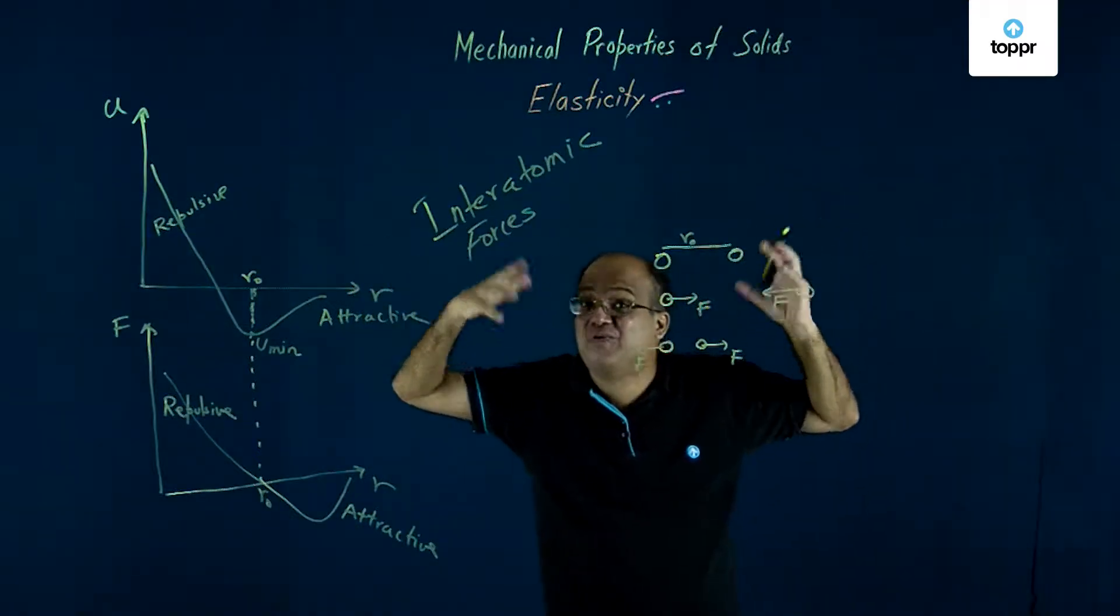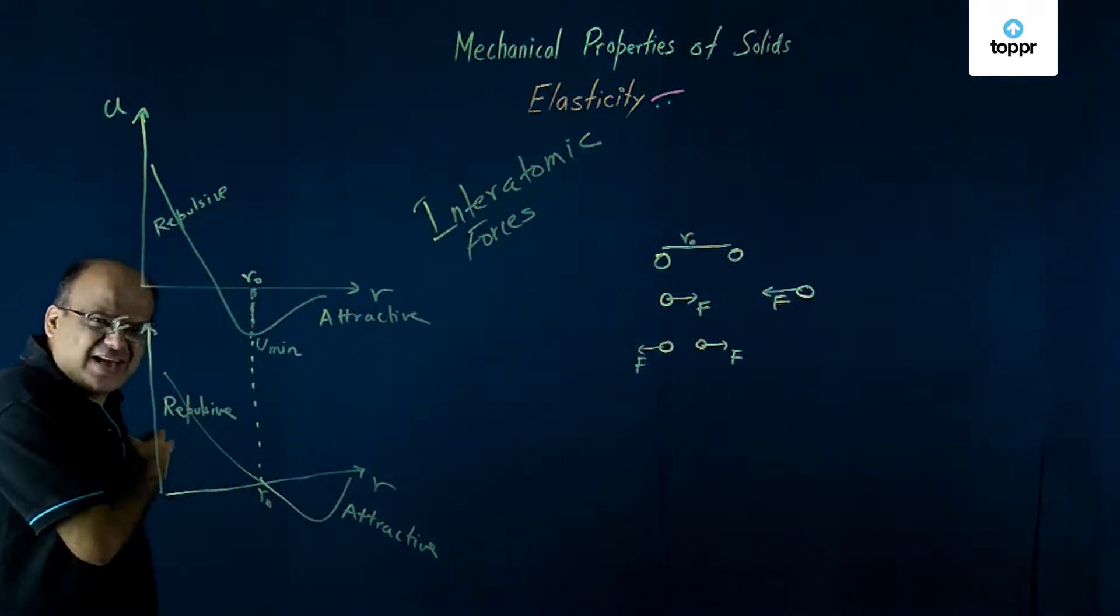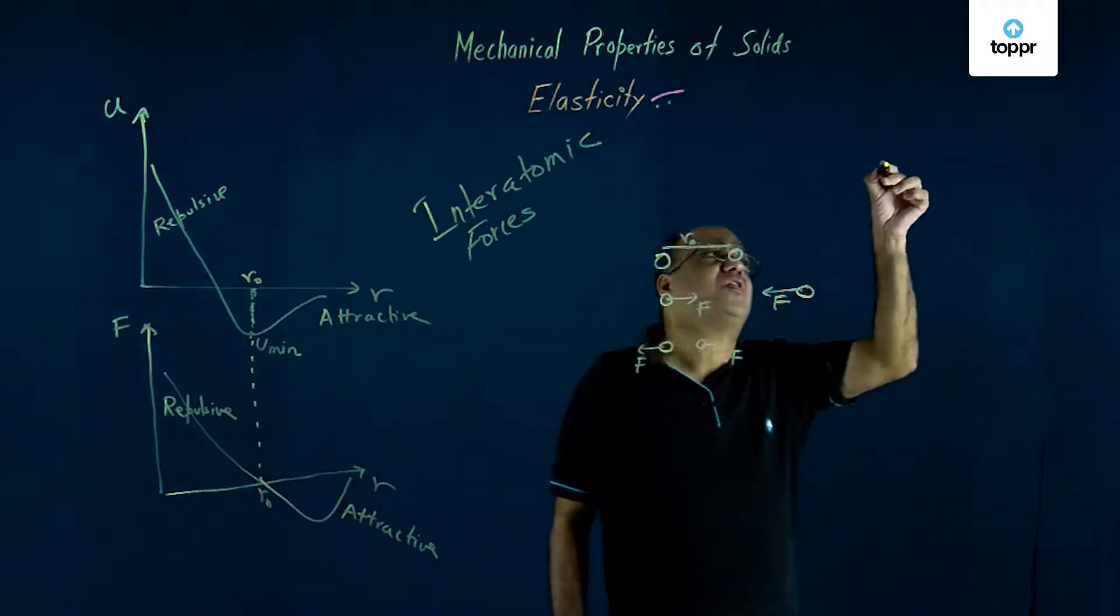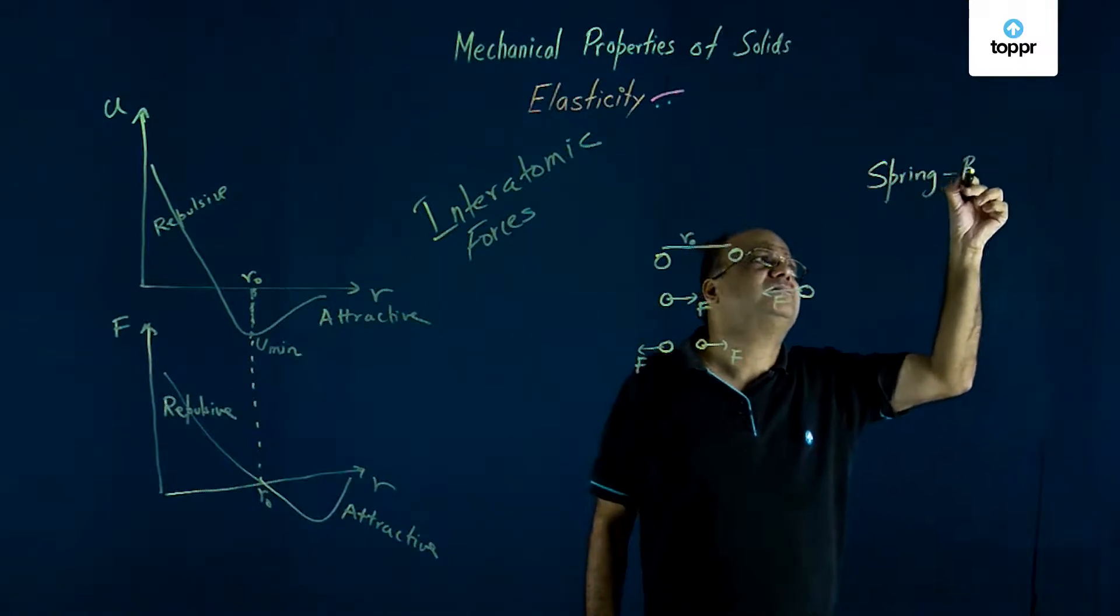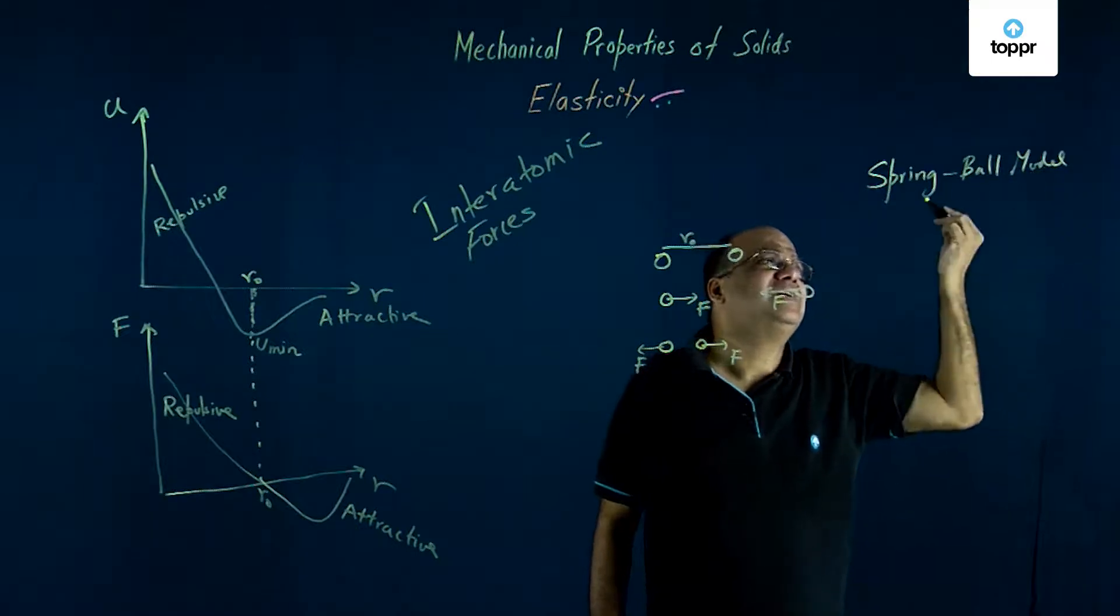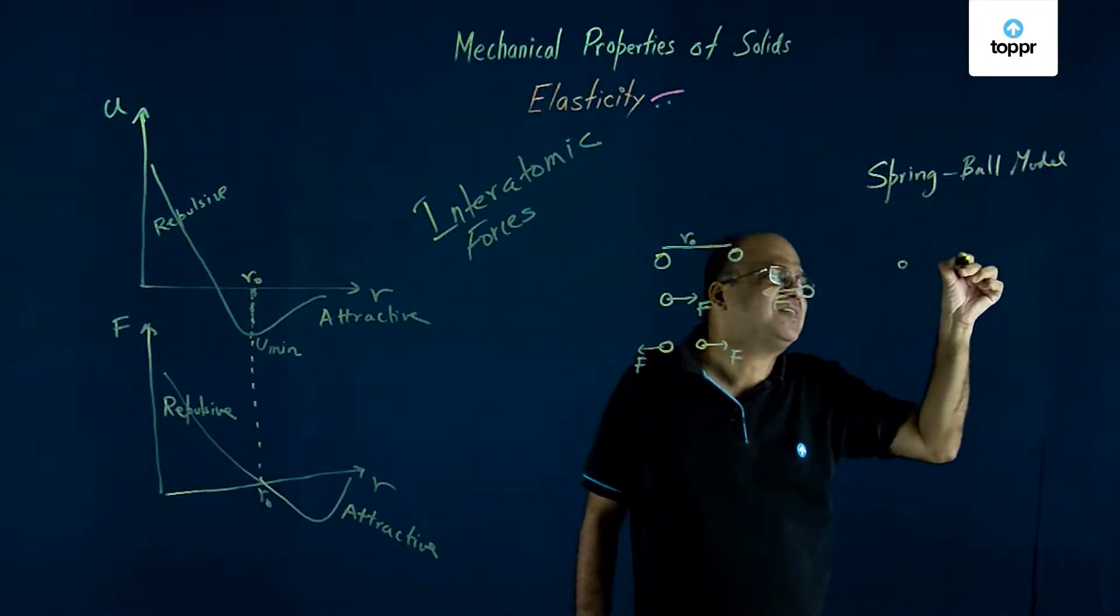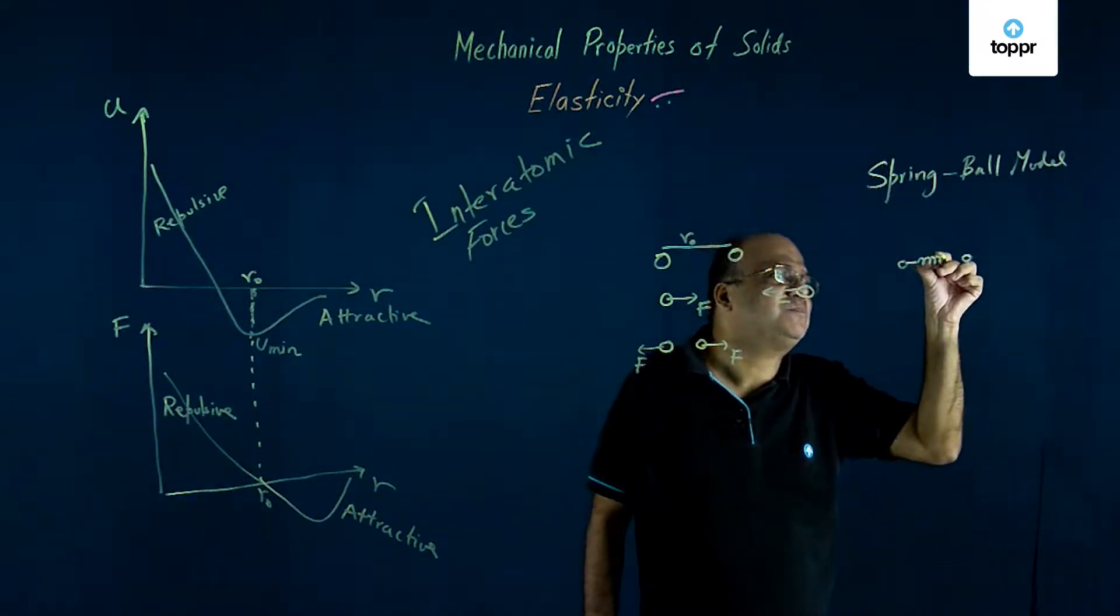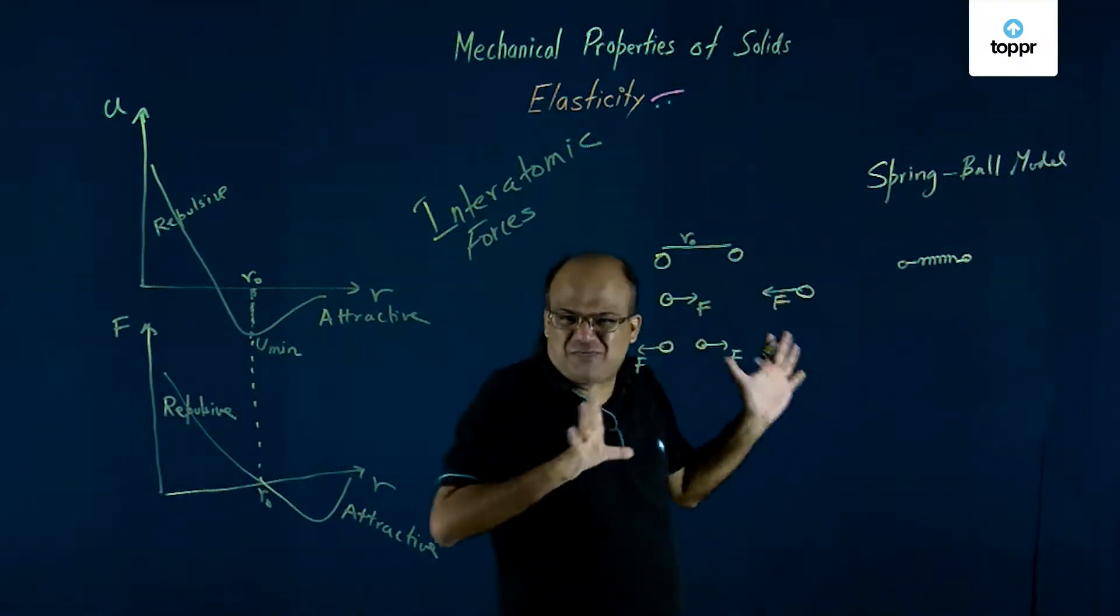And that is why we have elasticity. We can also understand elasticity in terms of spring-ball model of a solid. We can imagine the atoms are solid spheres or point masses connected to each other by springs. These springs represent interatomic forces.